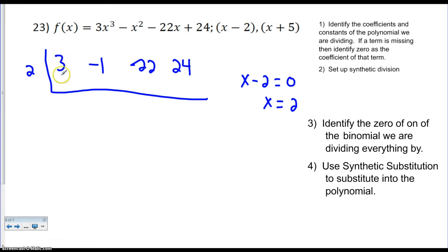So I'm going to bring down the 3. 3 times 2 gets me 6. Negative 1 plus 6 gets me 5. 2 times 5 gets me 10. Negative 22 plus 10 gets me negative 12. 2 times negative 12 is negative 24. And I get a remainder of 0.